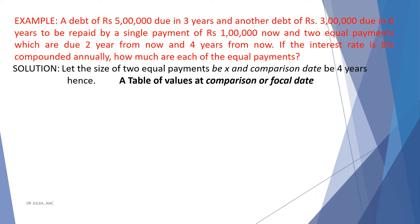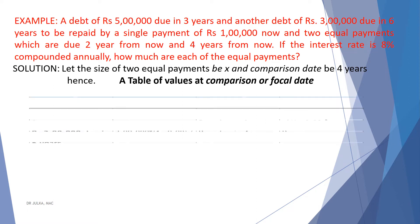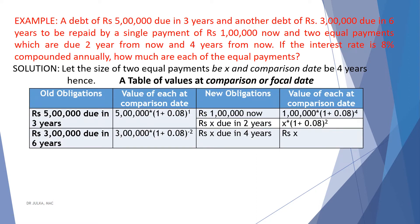Let the size of the 2 equal payments be Rs. x and the comparison date be 4 years. Now we prepare the table of values at the focal date, which is 4 years hence. The first old obligation is Rs. 5,00,000 due in 3 years, and the value at comparison date is 5,00,000 multiplied by 1.08 raised to the power 1, because we have to pay 1 year extra interest. Another debt of Rs. 3,00,000 is due in 6 years, and the value at focal date is 3,00,000 multiplied by 1.08 raised to the power minus 2, because here we are saving interest of 2 years.